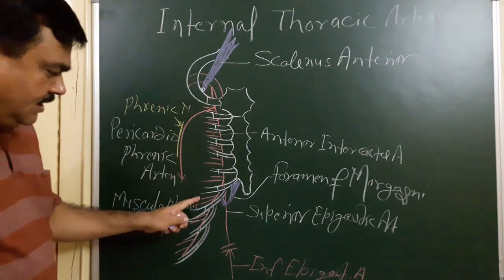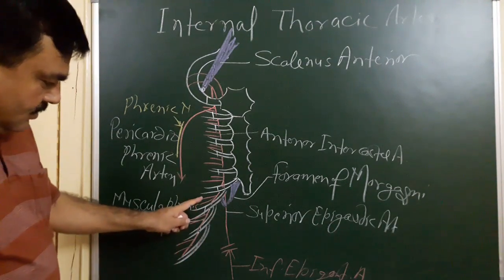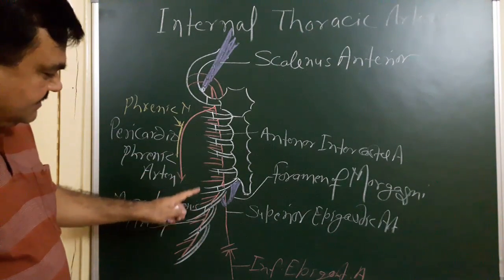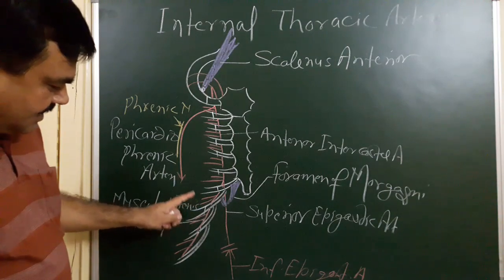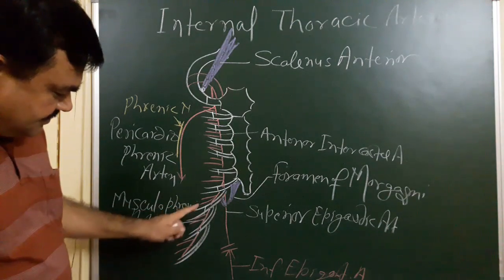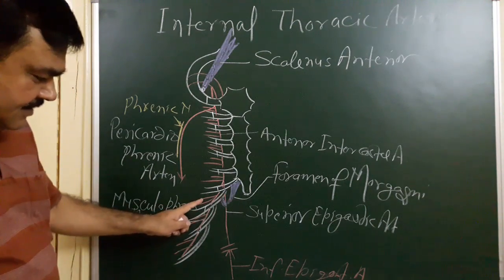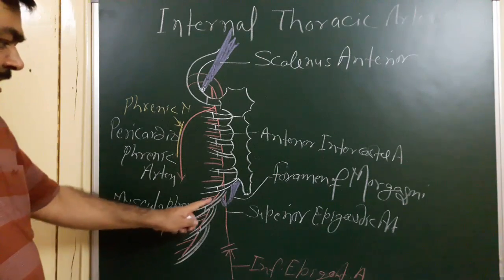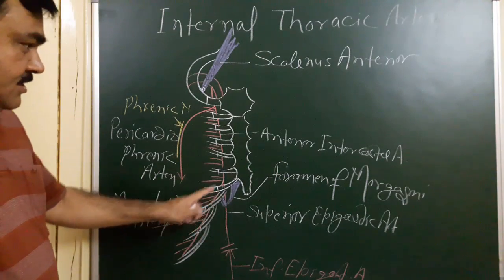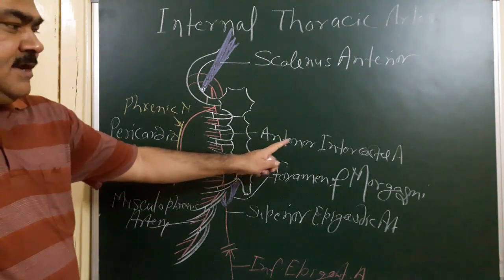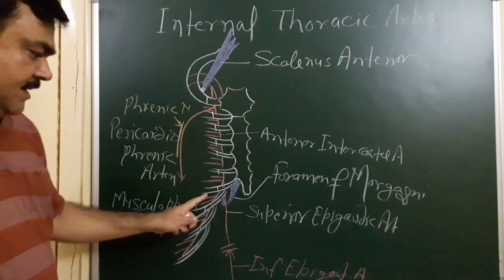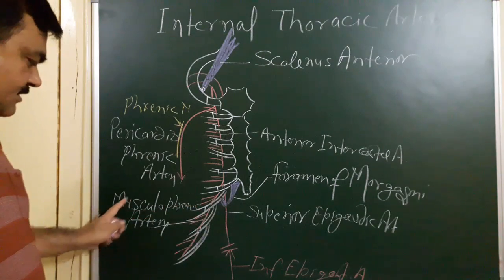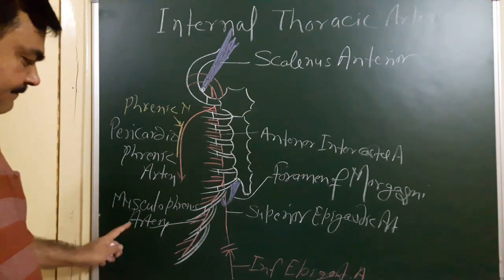In the lower three spaces — that is, the seventh, eighth, and ninth spaces — these anterior intercostal arteries are branches of the musculophrenic artery. So these anterior intercostal arteries in the lower spaces are a branch of the musculophrenic artery.